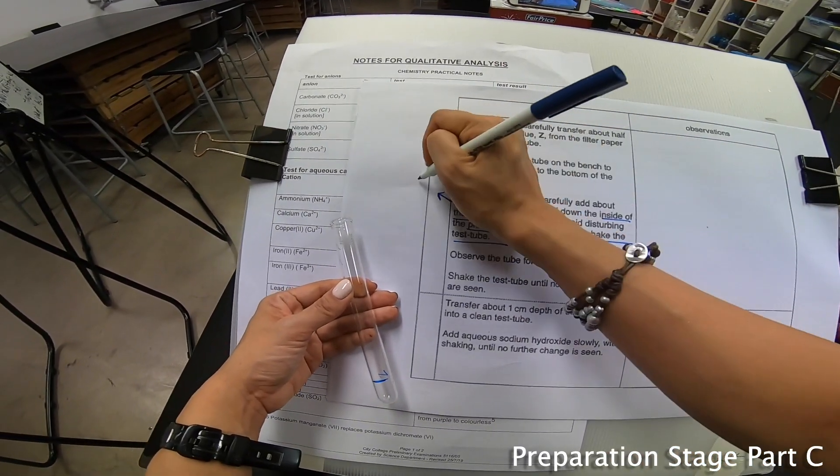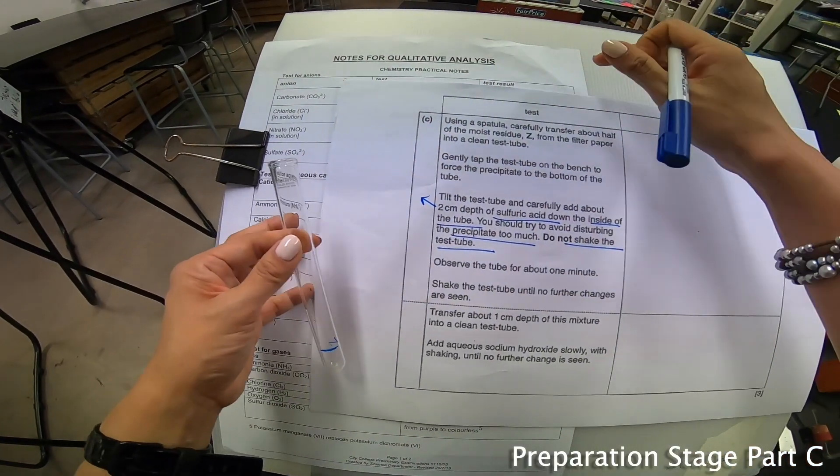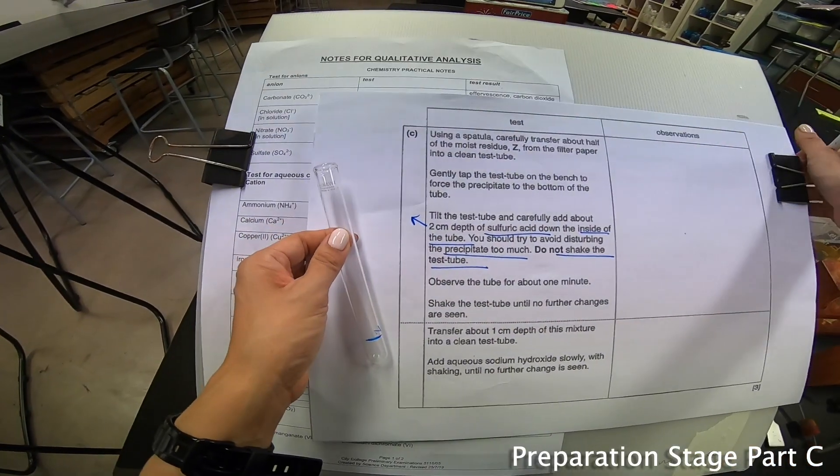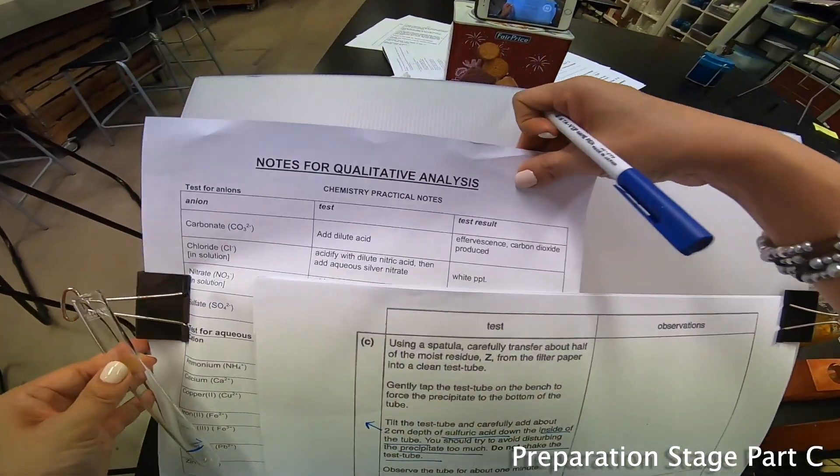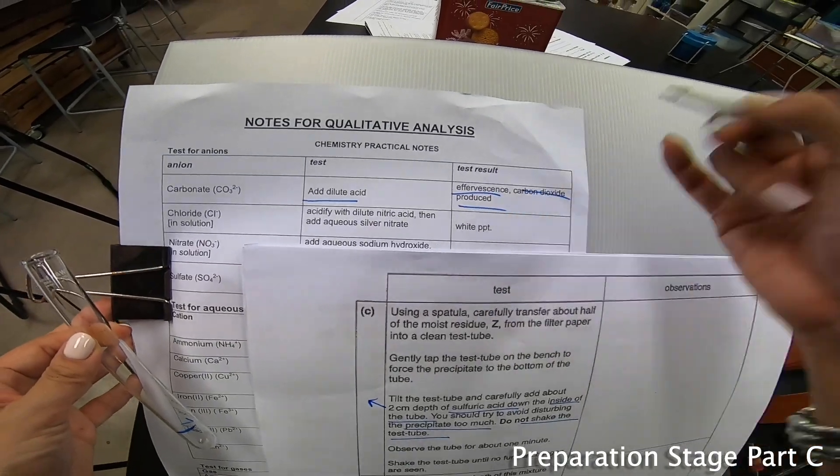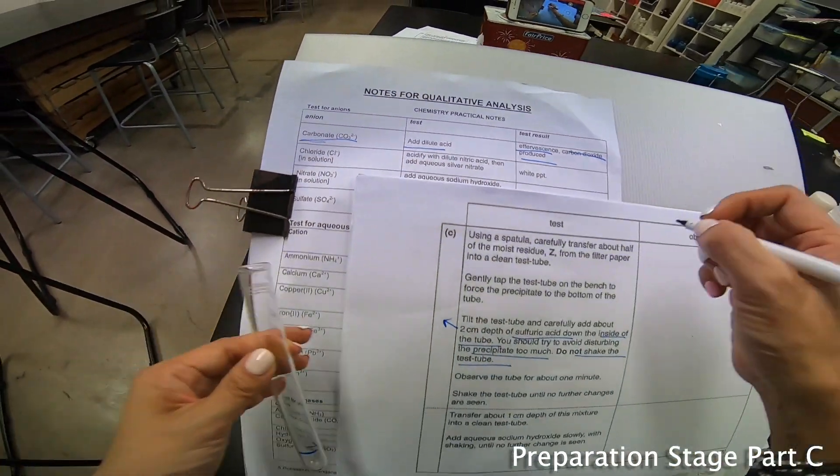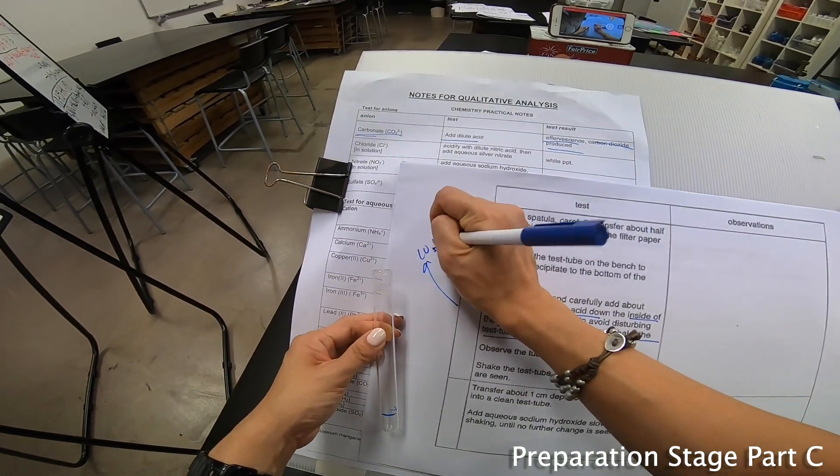Over here, because you're adding sulfuric acid, when I always say adding acid, the chance of it testing for an anion is high, which is none other than this portion here. Adding acid is actually my carbonate test over here, so I'm going to write down CO2 test for carbonate.